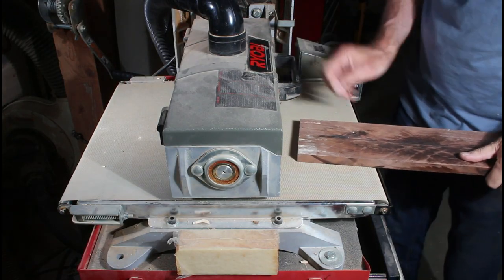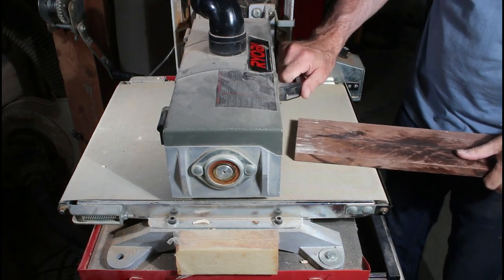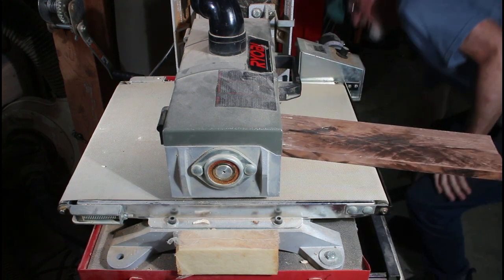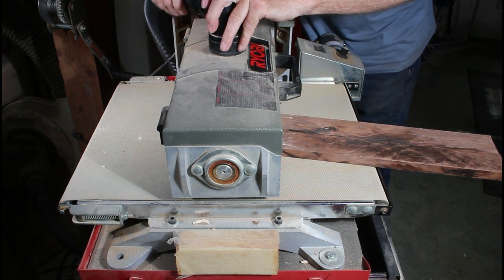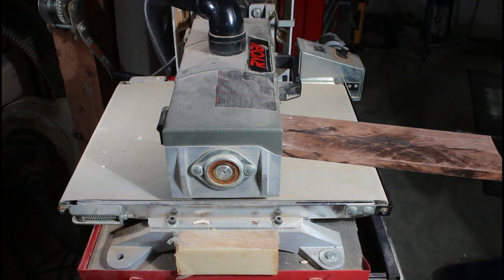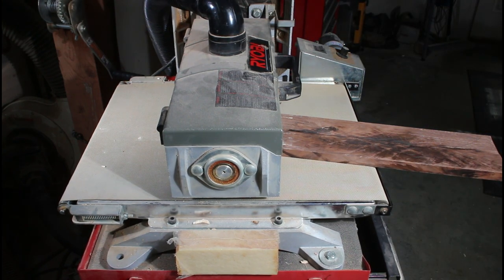So over to my production drum sander here. I've got some coarse grit sandpaper on there. I think it's about 150 grit. I'm going to hook up my dust collector, get some dust control going.